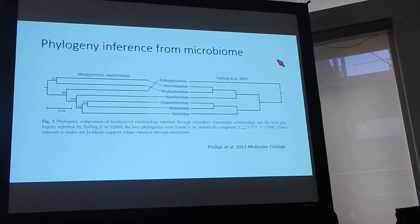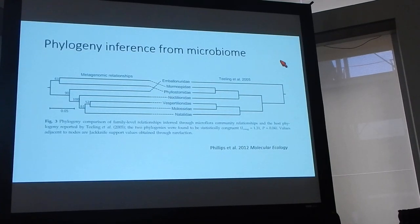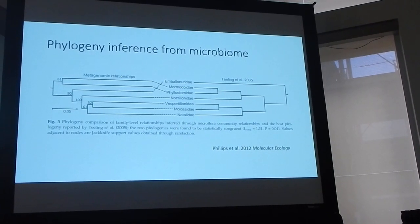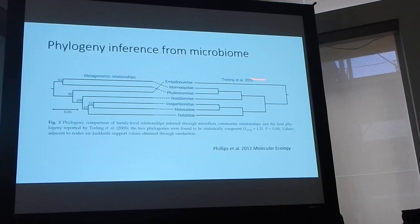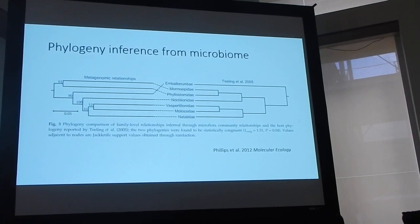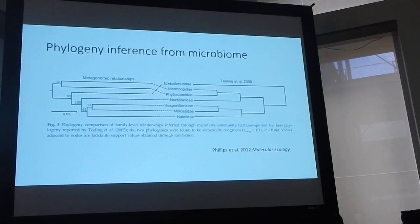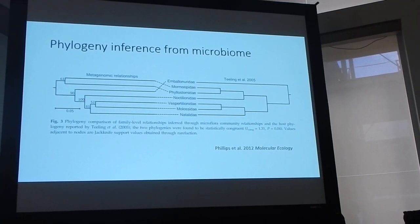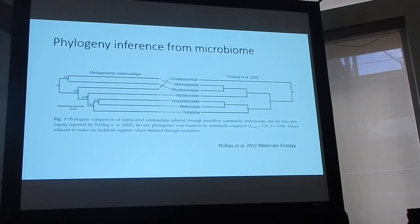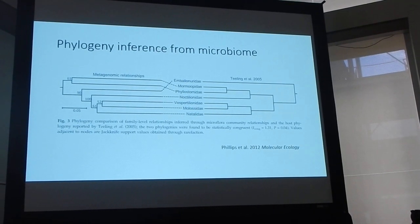Studies have found that there is a lot of host-specificity in microbial communities. For example, here we see a phylogenetic tree of different bat families compared to a cluster tree of microbial dissimilarities in the gut microbiome of the same bat families. We can see that there is a high degree of convergence between the two trees — the microbiota tree and the phylogenetics tree — showing that there is species-specificity in the microbiome communities.